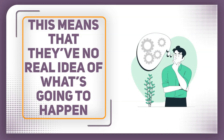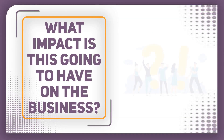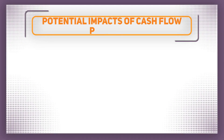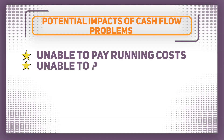We've covered some of the reasons a business might have a cash flow problem, but what impact is this going to have on the business? Well firstly and most obviously they might be left without enough cash to pay their running costs, including their workers' wages. This will cause motivation issues which could lead to low productivity or even staff walking out and going on strike.